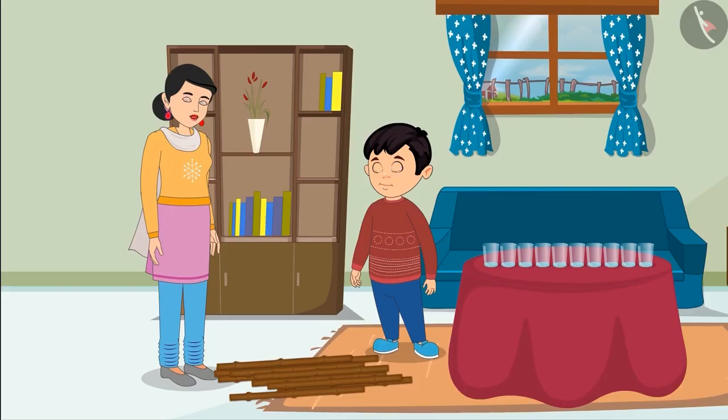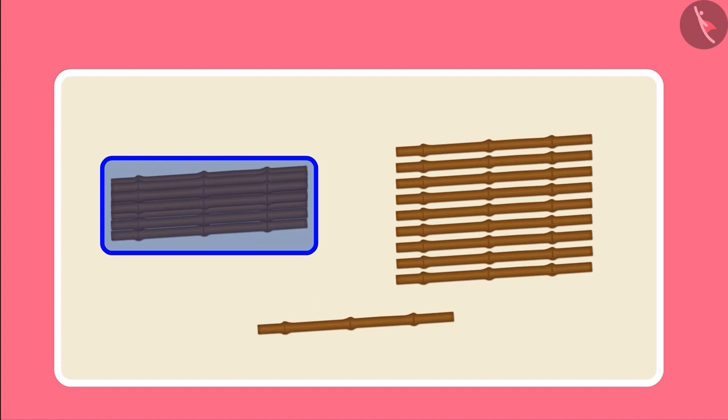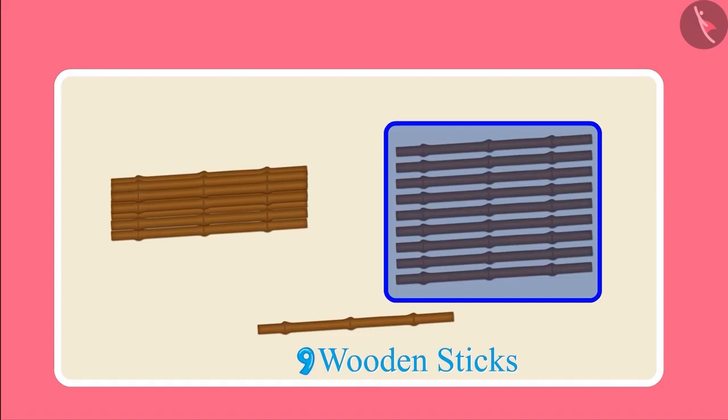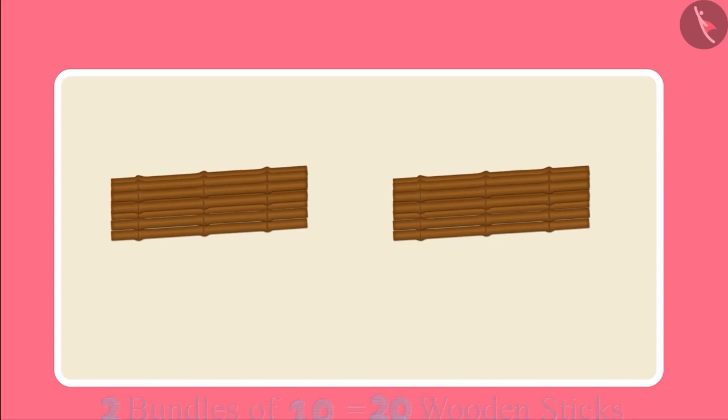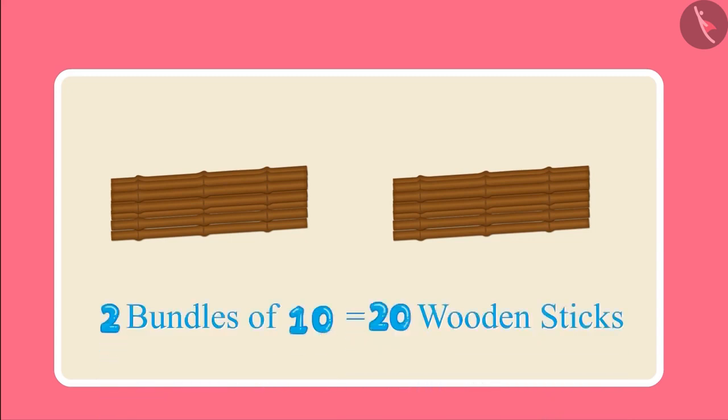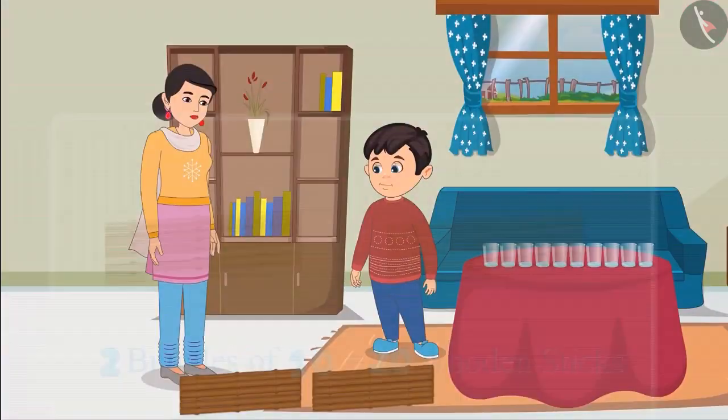So Choto, as soon as we have 10 objects, we make their bundle and count open objects till 9. As soon as we get another wooden stick after 19, we make another bundle of 10, which gives us 2 bundles of 10.